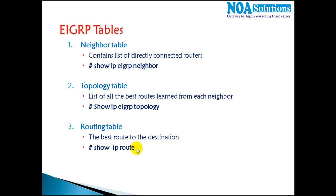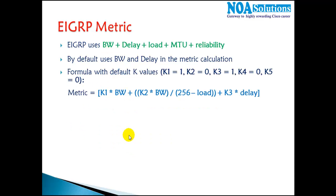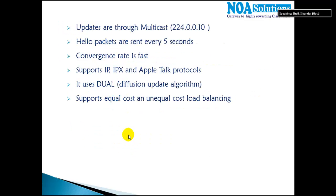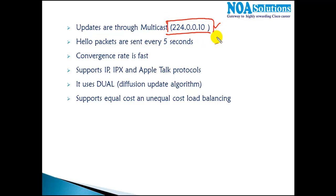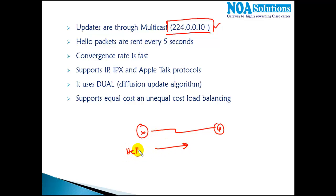Updates are sent on multicast address 224.0.0.10, and all EIGRP routers listen on that address. To recap: step one, send and receive hello messages; step two, send and receive update and acknowledgement packets; step three, converge and build the routing table. After initial convergence, subsequent updates are sent only when there is a change — EIGRP uses incremental updates.